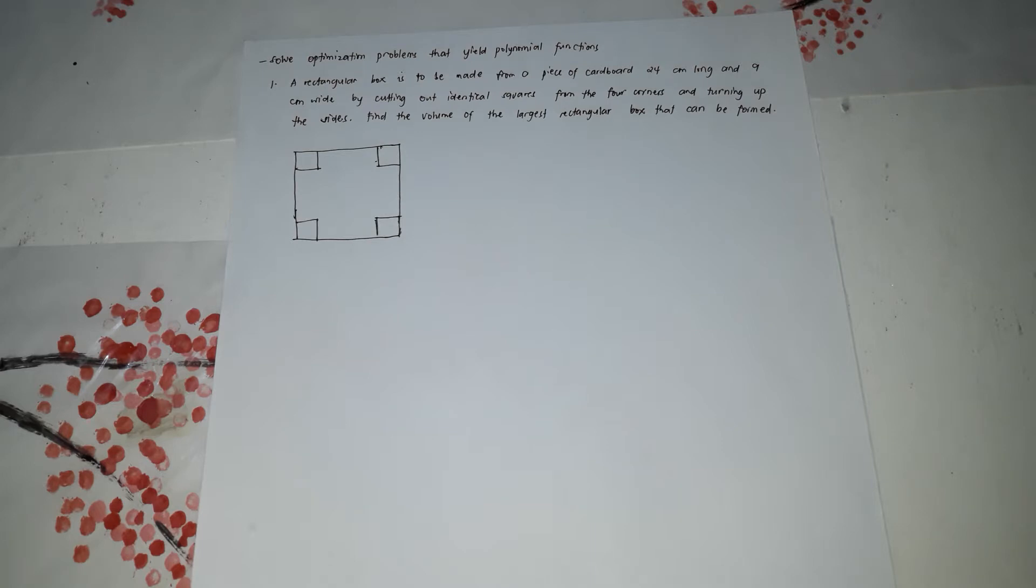First problem is a rectangular box is to be made from a piece of cardboard 24 cm long and 9 cm wide by cutting out identical squares from the four corners and turning up the sides. Find the volume of the largest rectangular box that can be formed. So this is the diagram.